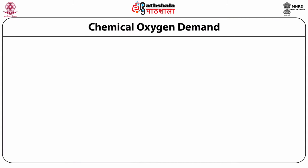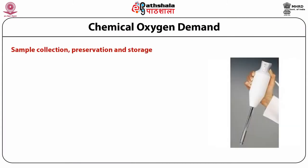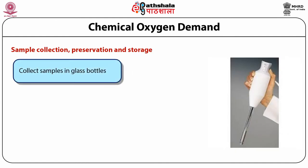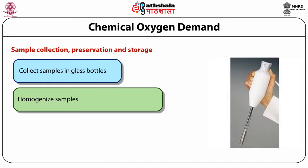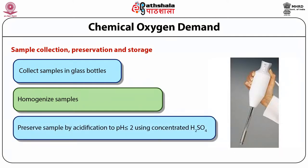The first step of COD analysis is sample collection, preservation, and storage. For collection, we prefer glass bottles, as homogenized samples containing settleable solids are better stored in glass rather than polyethylene bottles. If there is a delay between collection and analysis, preserve the sample by acidifying to pH less than 2 using concentrated H2SO4; the sample can then be preserved for a maximum of 7 days.